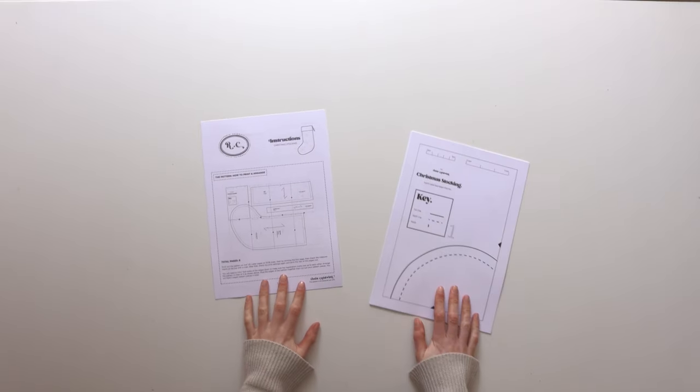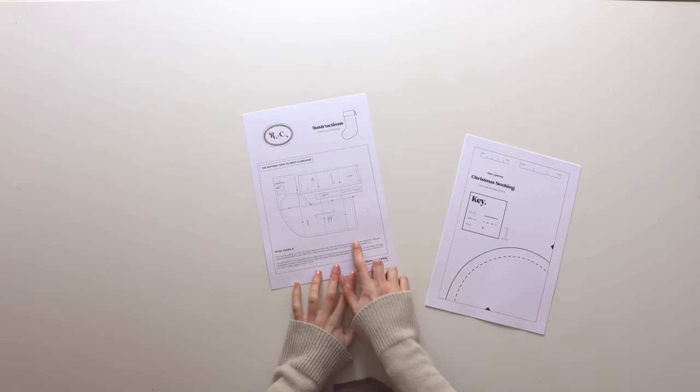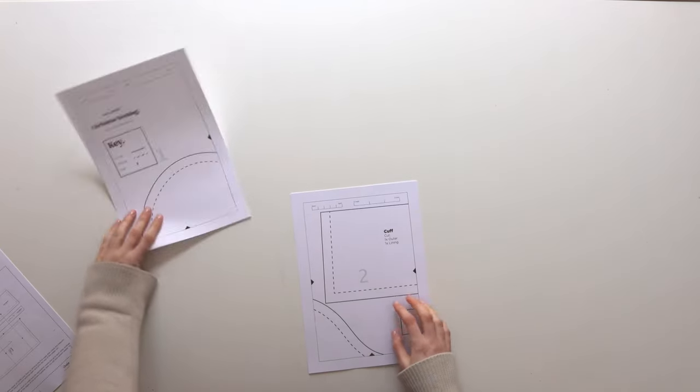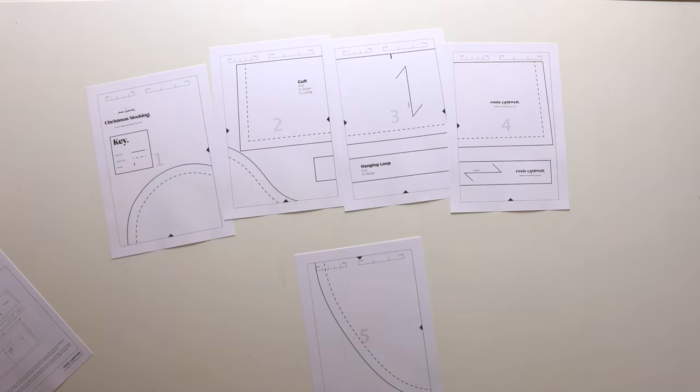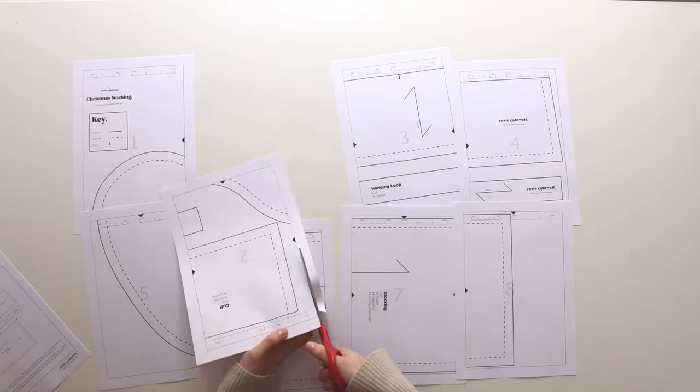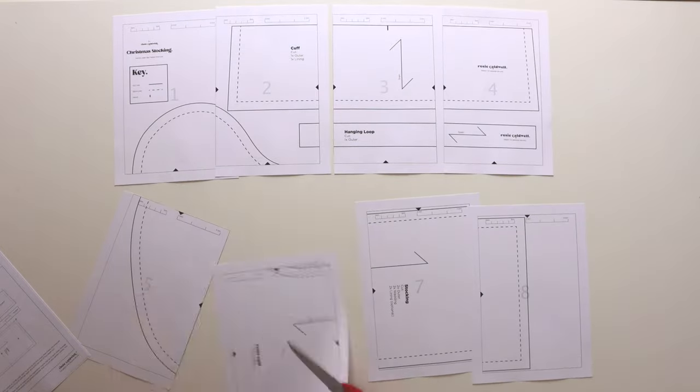There we go. I now have my instruction booklet printed out and my pattern. So we're going to start by arranging the pattern and the stocking has two rows of four. You're going to need to trim some of the edges so that you can fit the pattern pieces together and line up the registration marks.